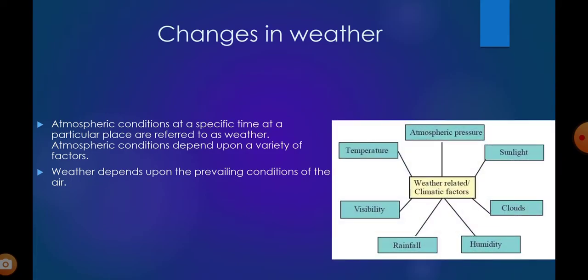The factors affecting weather are: atmospheric pressure, sunlight, clouds, humidity, rainfall, visibility, and temperature. You must have seen in the TV news — at the end of the news they announce today's weather report, or the coming 24-hour weather report. They measure these conditions with the help of various methods.